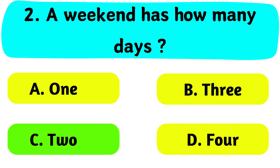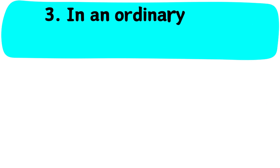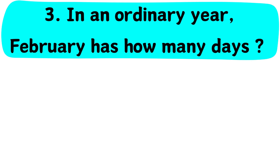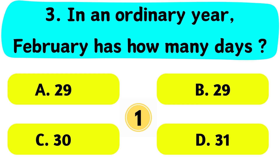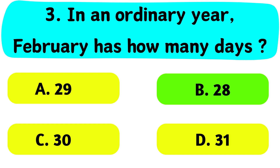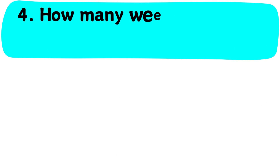Question No. 3. In an ordinary year, February has how many days? A. 29, B. 28, C. 30, D. 31.